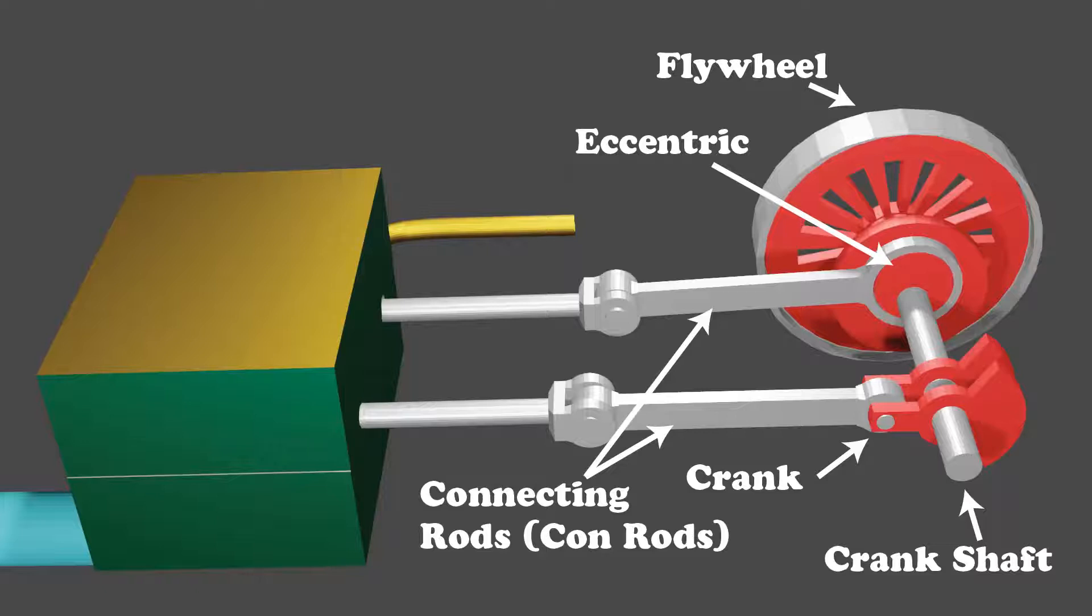The connecting rods, more commonly known as con rods, are there to connect the rotating part of the engine to the oscillating part.